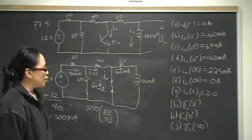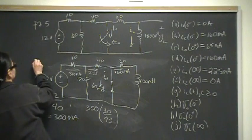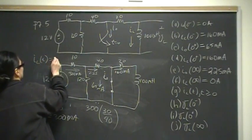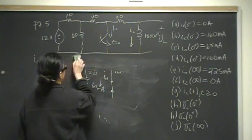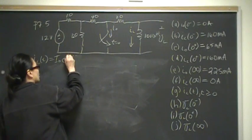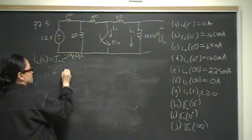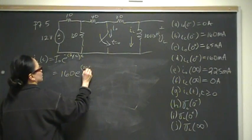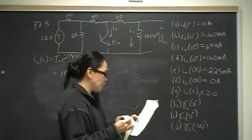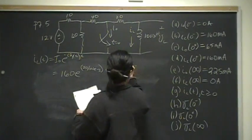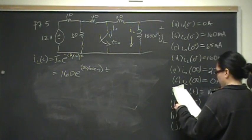For the general equation of the inductor current, the natural response formula is the initial current times e raised to the negative R over L times t. With initial current 160 milliamps, R equals 20 ohms, and L equals 100 millihenries, the exponent is minus 200t. The general equation for the inductor current is i_L(t) = 160e^(−200t) milliamps.